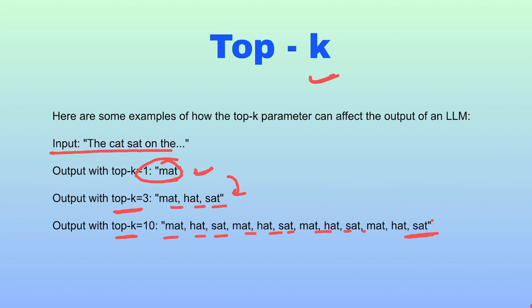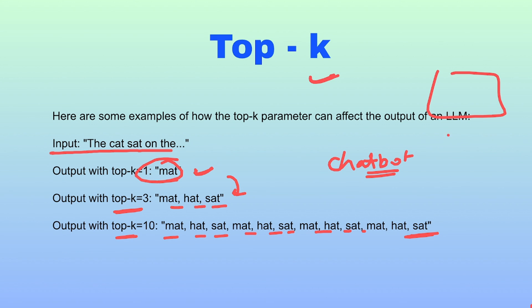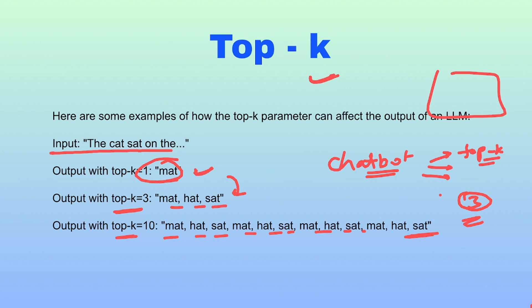Again, it depends on the use case. For example, if you're building a chatbot and want to generate three different product suggestions for each question, set top-k to 3. Different applications — chatbots, text summarization, creative writing — call for different top-k values. The optimal value varies by application, and it's important to experiment with different values to find what works best. There's no fixed rule: temperature, top-p, and top-k all depend on your use case.